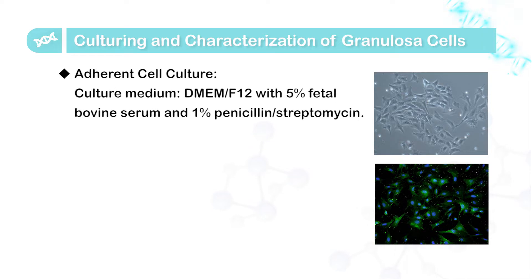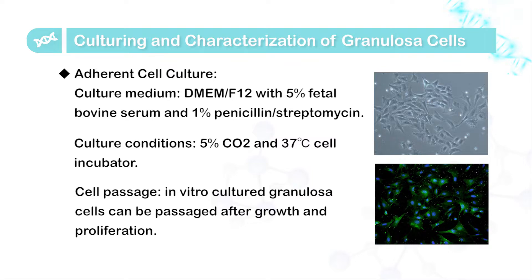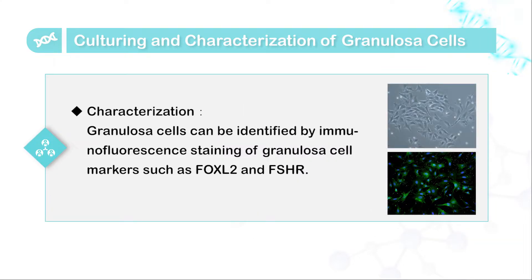The culture medium commonly used is DMEM-F12, supplemented with 5% fetal bovine serum and 1% penicillin-streptomycin. The culture conditions are 5% carbon dioxide and 37 degrees centigrade. In vitro, granule cells can be passaged after growth and proliferation. Furthermore, granule cells can be identified by immunofluorescence staining of granule cell markers such as FOXL2 and FSHR.